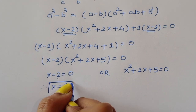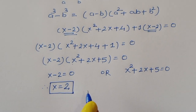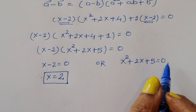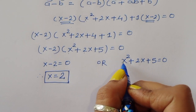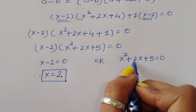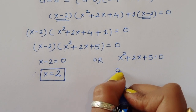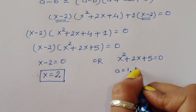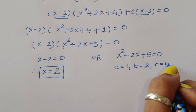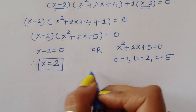From the first equation, x minus 2 equals zero, so x equals 2. This is the first value of x. For the second equation x squared plus 2x plus 5 equals zero, the coefficients are: a equals 1, b equals 2, and c equals 5.